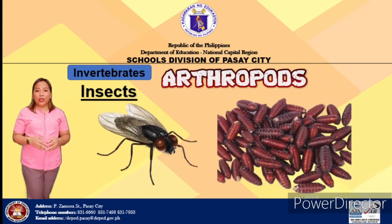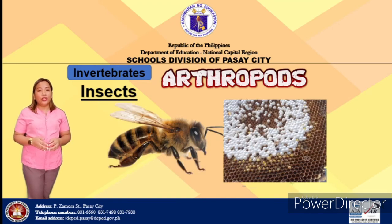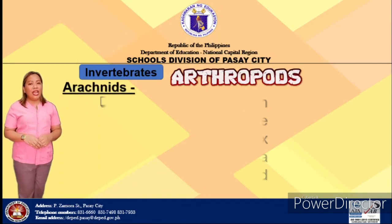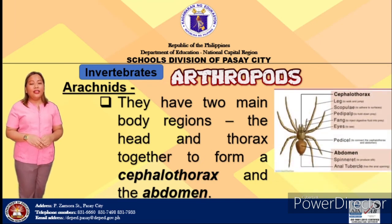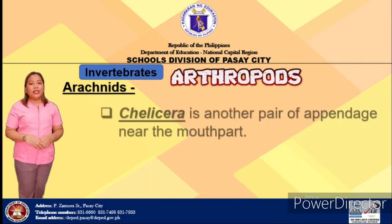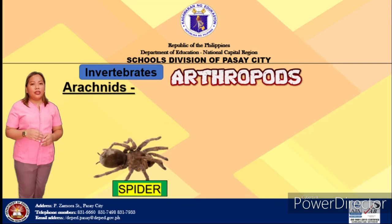These insects reproduce quickly. Flies, for example, can lay 100 eggs at one time, and a queen bee can lay one million eggs during her life. The second class of arthropods is arachnids. Arachnids have two main body regions: the head and thorax combined together to form a cephalothorax, and the abdomen. They have four pairs of jointed legs attached to the cephalothorax. Aside from the eight legs, they have another pair of appendages near the mouth called chelicerae, which are used to hunt their prey, mainly insects. Examples are spiders, ticks, scorpions, and mites.